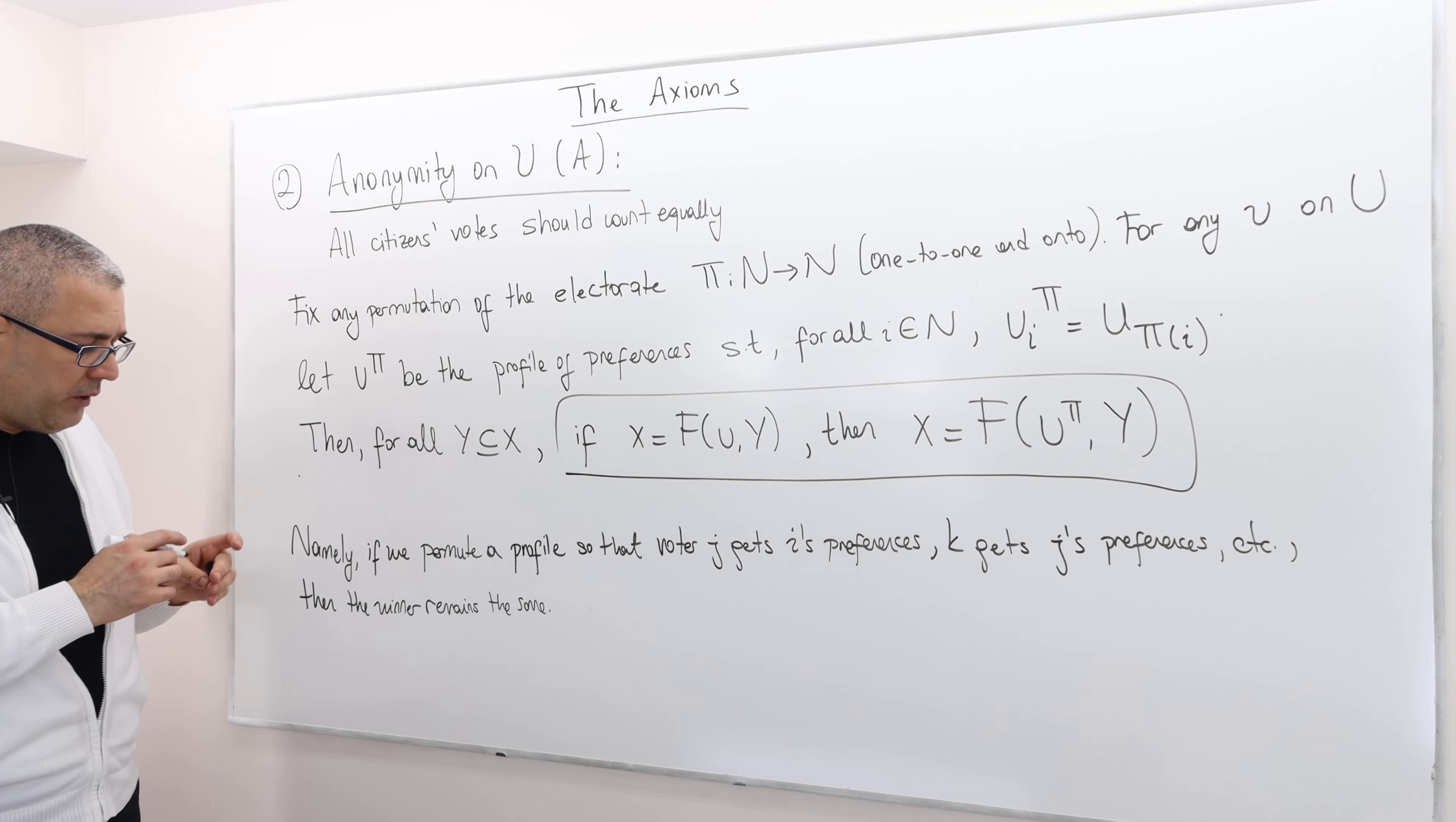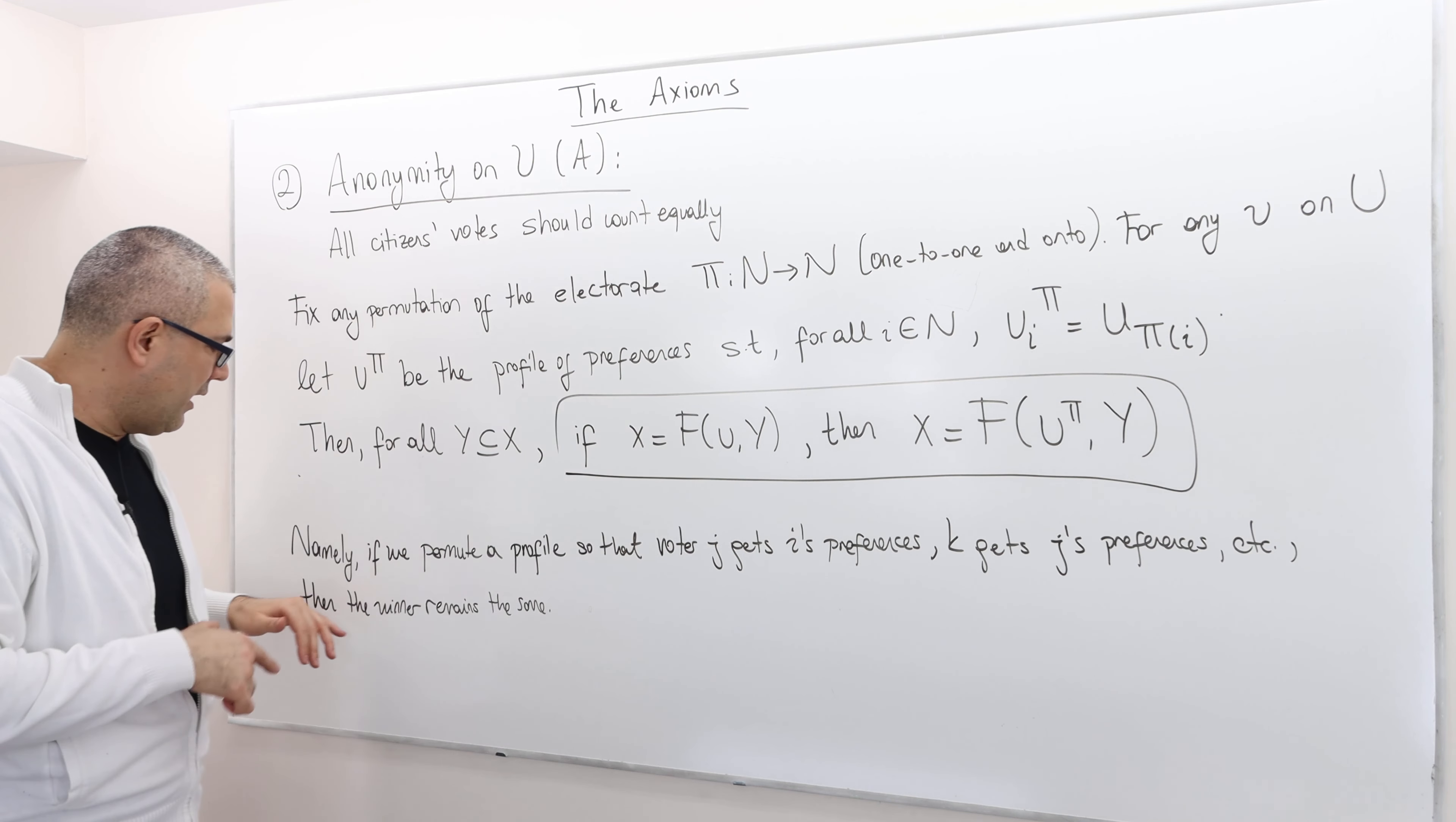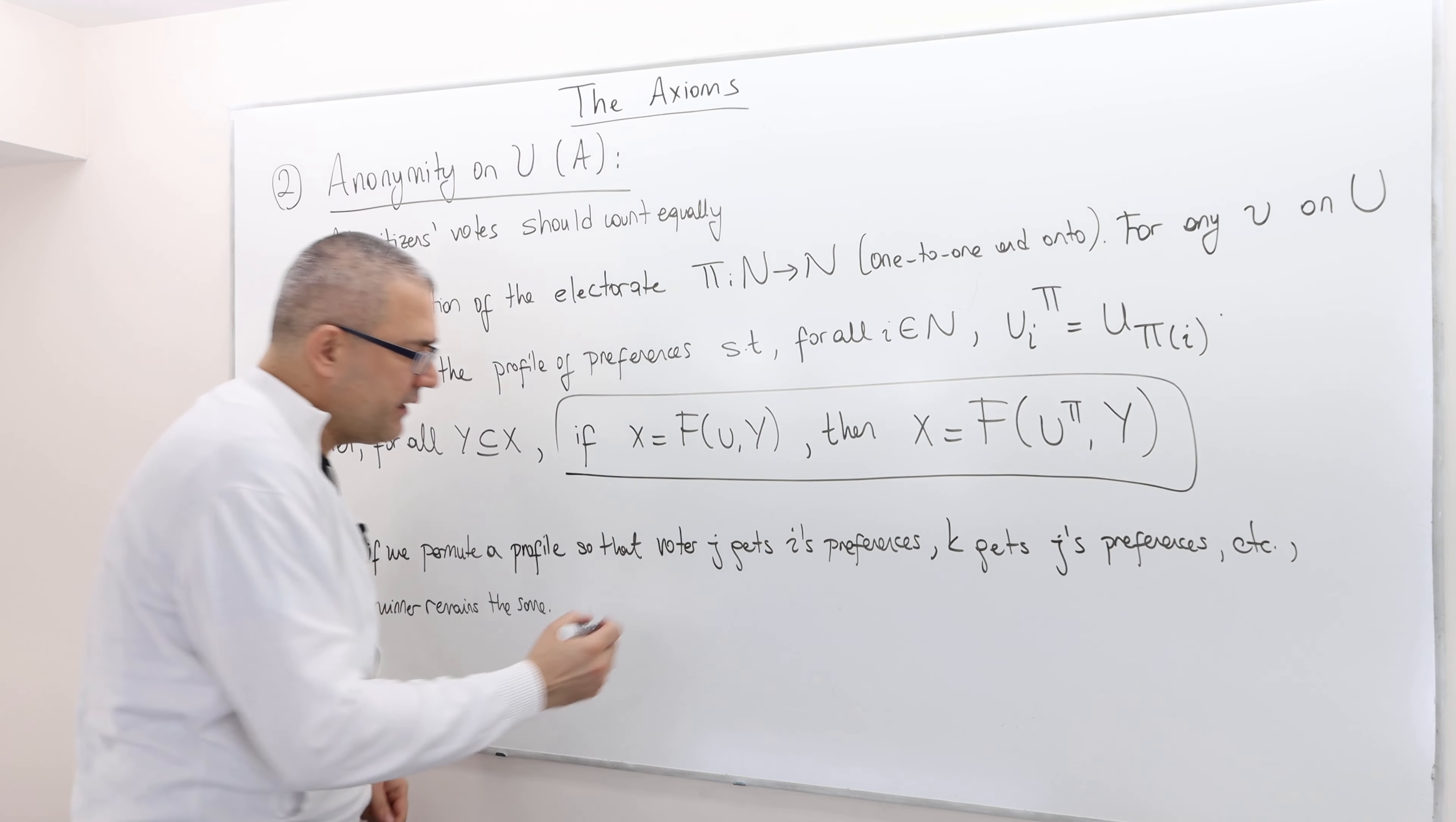Well, namely, if we permute a profile of preferences so that voter j gets i's preferences, k gets j's preferences and so on and so forth, well, then the winner remains the same because the name or the identity of the voters is not important. I don't know if it is going to help, but think it this way.